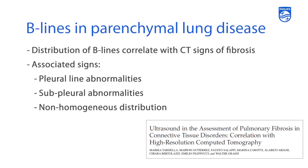B-lines in parenchymal lung disease are a little bit different. We have some studies evaluating patients with parenchymal lung disease and comparing chest CT radiography to ultrasound to understand what the pattern of B-lines are in this patient population. There are a couple of different associated signs besides just having B-lines in a less homogenous distribution. You can also get pleural line abnormalities, some subpleural abnormalities, and that non-homogenous distribution.